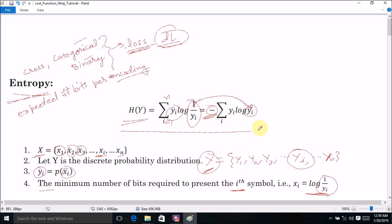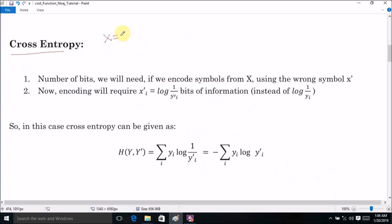So this is the basic discussion of concept of entropy. Now when we go through the concept of cross entropy, then we will check that how this representation of wrong symbol or different symbol changes the value of entropy. In earlier discussion, we had set X with symbol X1, X2, X3, XI, XN with probability distribution Y1, Y2, Y3, YI, YN.